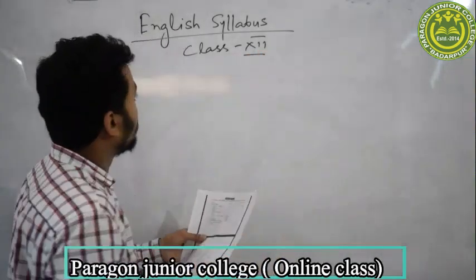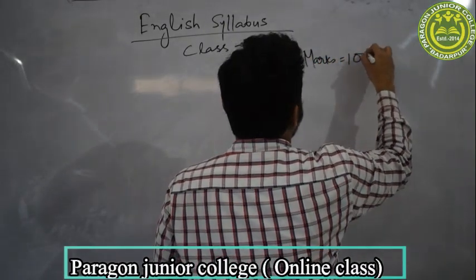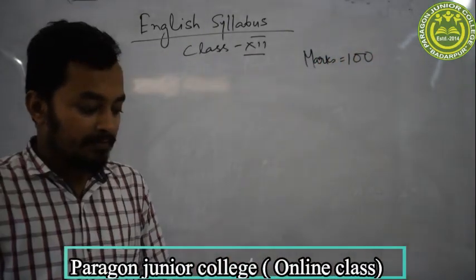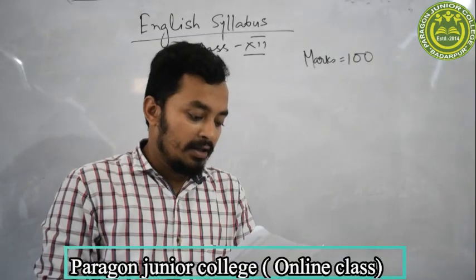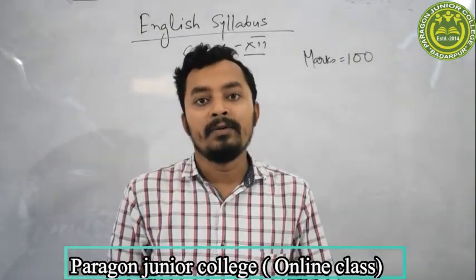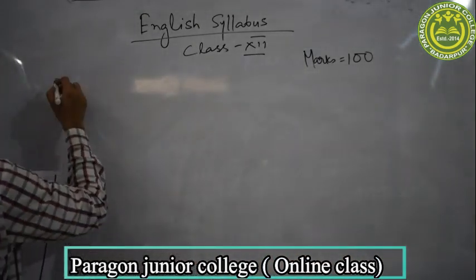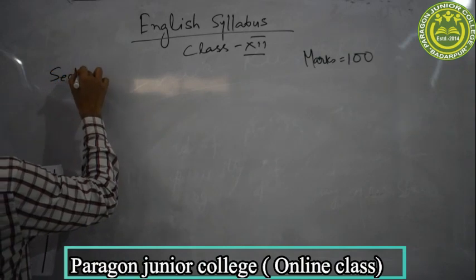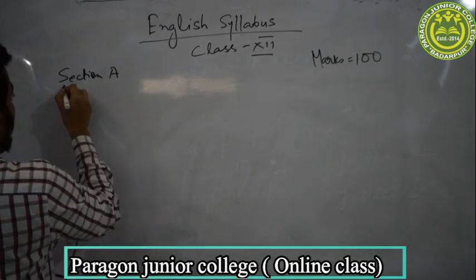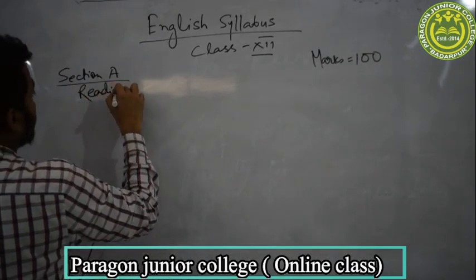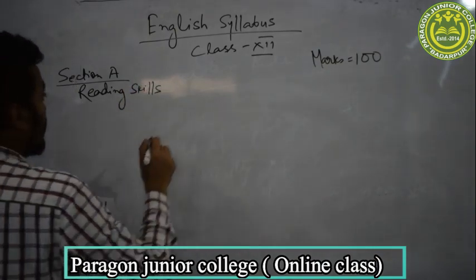English syllabus, class 12. Total marks: 100. The syllabus of English consists of 100 marks. There are four subdivisions in the total syllabus. Section A is Reading Skills, which consists of 10 marks.